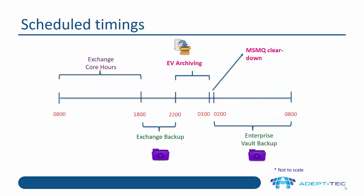Here is an example of schedule timings — just an example you need to tailor to your environment. In this example, Exchange core hours are from 8am to 6pm. Then you do your Exchange backup, running for four hours from 6pm to 10pm. Then the EV archiving window runs from 10pm to 1am. It's very important to have a period where the message queues can clear down. Then the Enterprise Vault backup would start at 2am and, in this case, run to 8am.